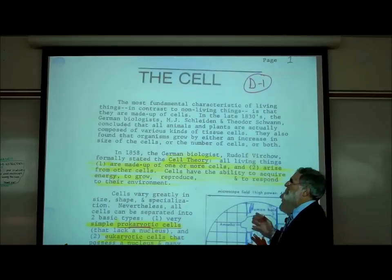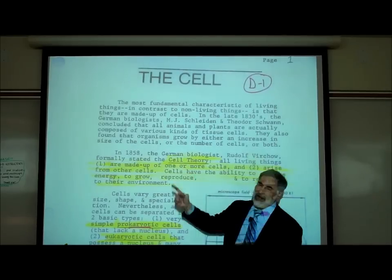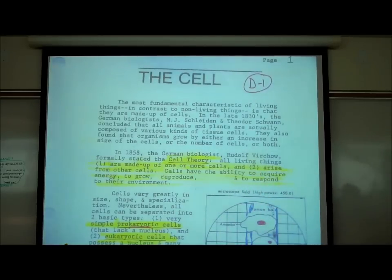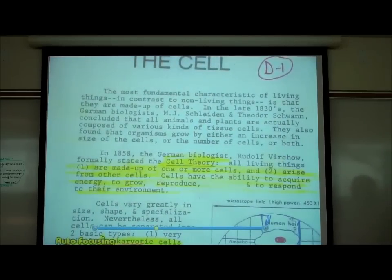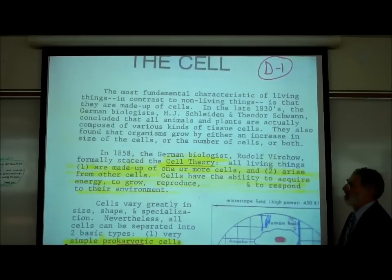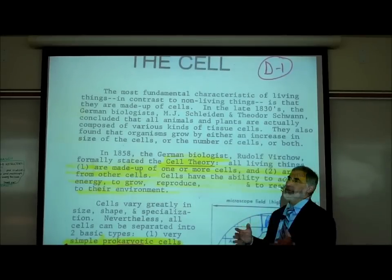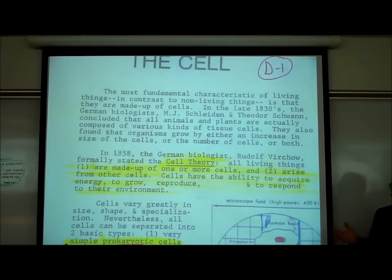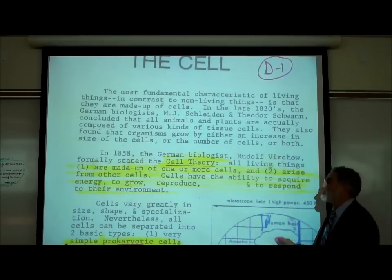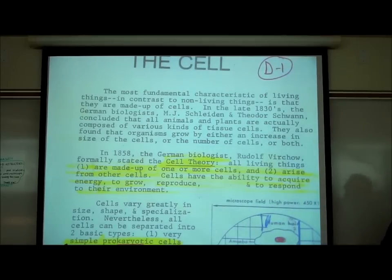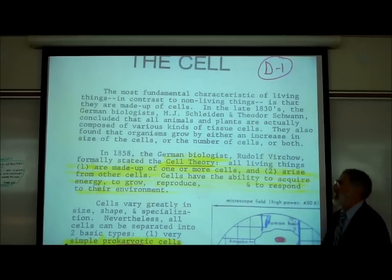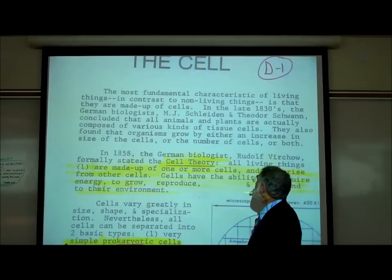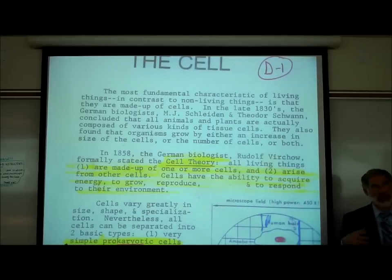The basic concept of cells is the cell theory, which you've probably heard of from lecture. The cell theory is the concept that all life, at least here on planet Earth, is made up of cells. And presumably even life, if it exists elsewhere, would also be made up of cells. This was proposed in 1858 by a number of biologists.